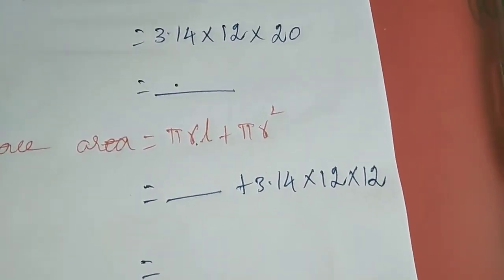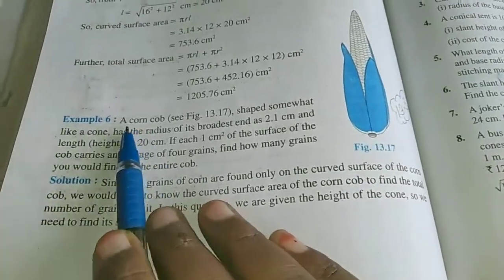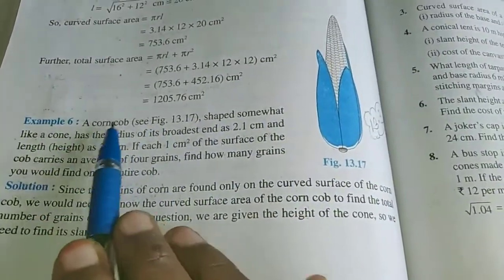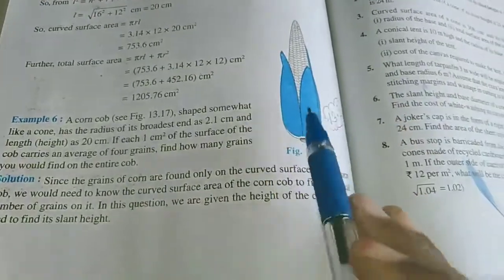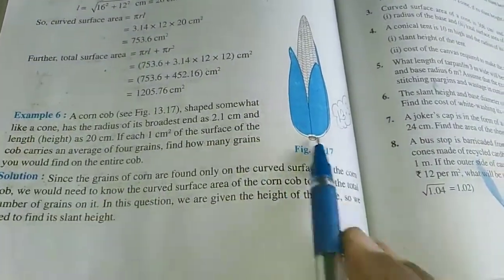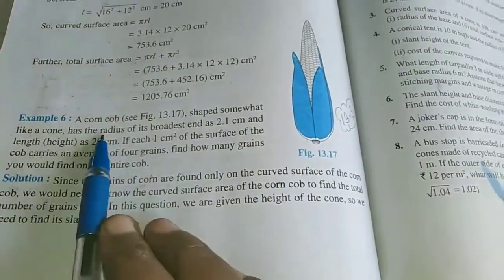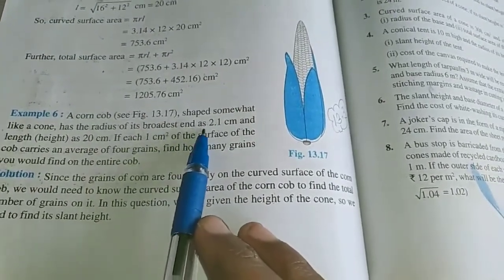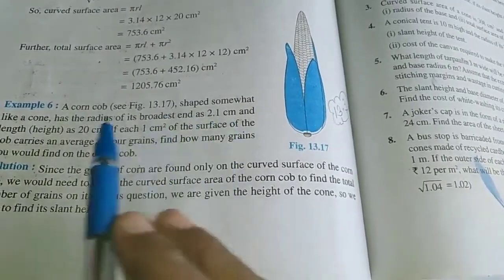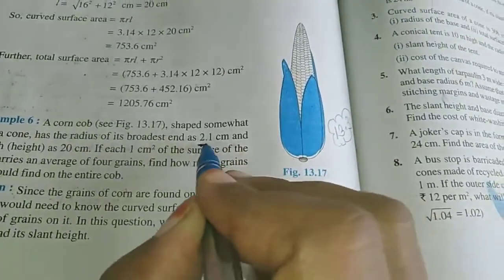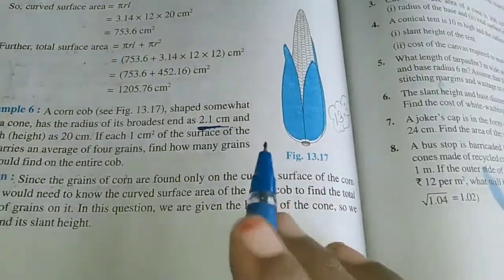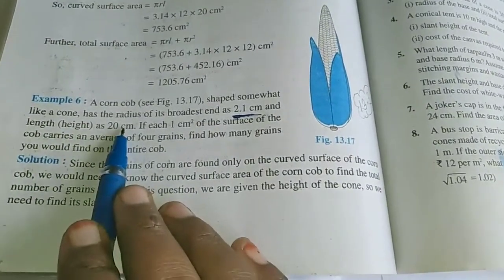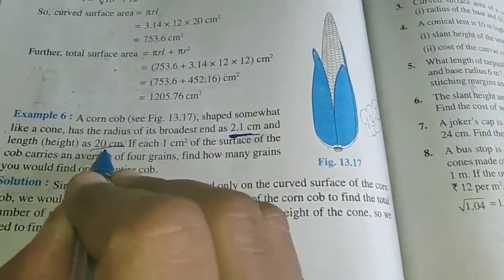Now I am going to move to example 6. A cone cup, shaped somewhat like a cone. The radius of its base is 2.1 centimetres and the height is 20 centimetres, they gave the height, that is height is 20 centimetres.